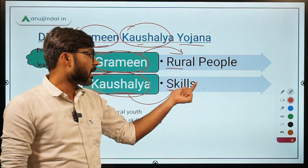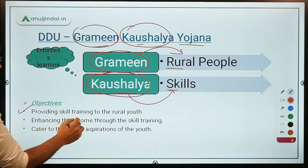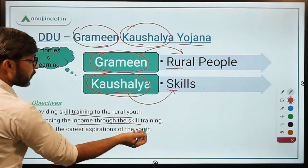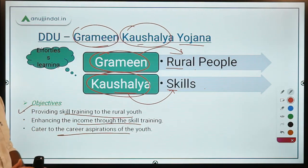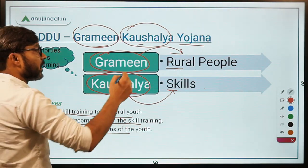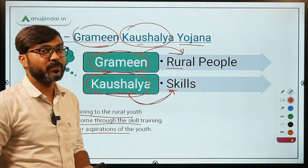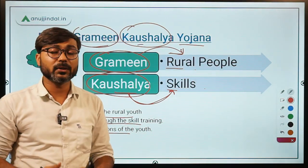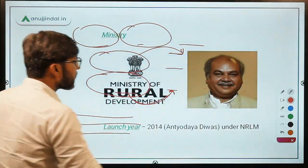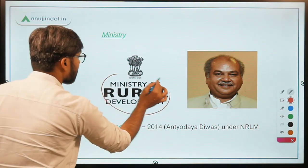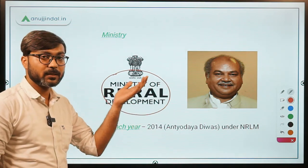So basically the objective is to provide skill training to the rural youth, enhancing their income through skill training, and catering to the career aspirations of the youth. Grameen means rural people and kaushalya means skill — this scheme is all about providing skill training to the rural youth and thereby enhancing their income by providing employment. The ministry implementing this scheme is, of course, the Ministry of Rural Development, because we are talking about rural people.